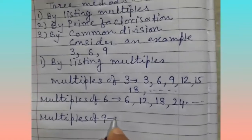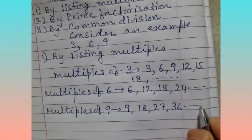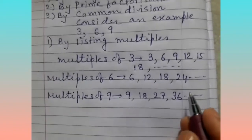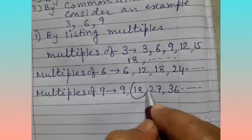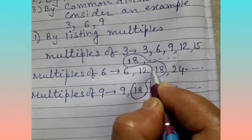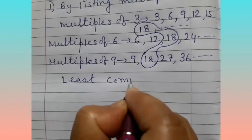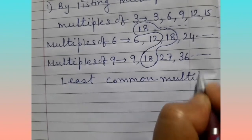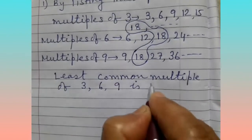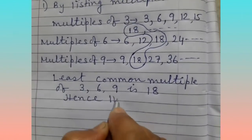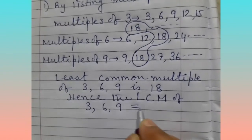Multiples of 9: 9 ones are 9, 9 twos are 18, 9 threes are 27, 9 fours are 36, and so on. Here we can see the least common multiple is 18 in both cases. So we write: least common multiple of 3, 6, 9 is 18. Hence the LCM of 3, 6, 9 equals 18.